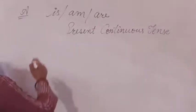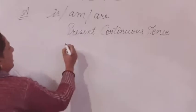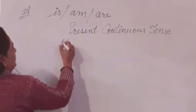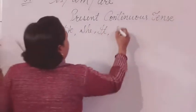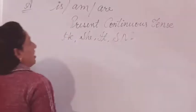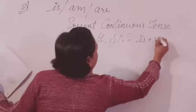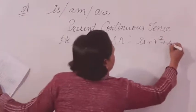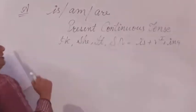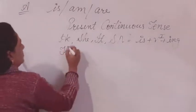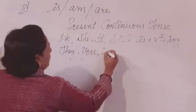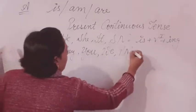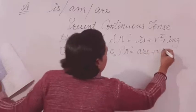The rules are: if your subject is singular — he, she, it, or a singular noun — we will use IS plus the verb in first form plus ING. If your subject is plural — they, you, we, or a plural noun — we will use ARE plus the verb in first form plus ING.